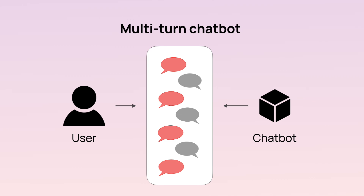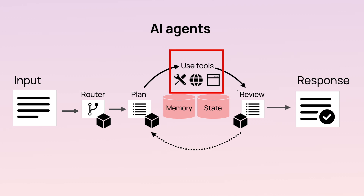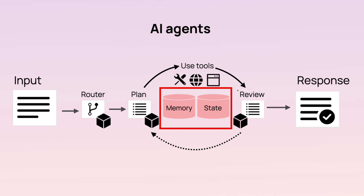AI agents are also worth defining. There is some discussion on how to define an agent, but usually they have three traits. First, they have a planning step — they decide how to solve a task and choose the right next step. Second, they can use tools, like interacting with external APIs, internet search, or databases. Third, they have memory to keep track of complex tasks or conversation context.